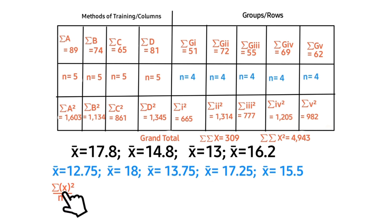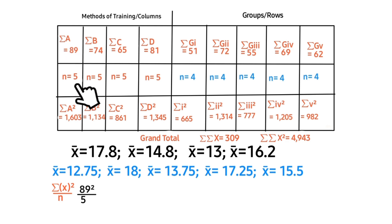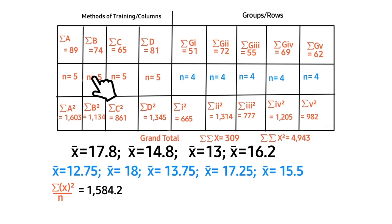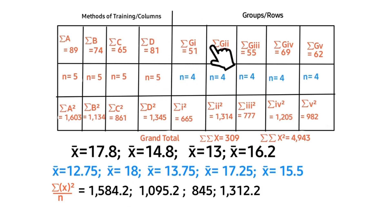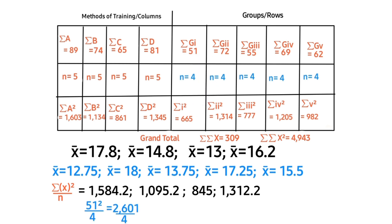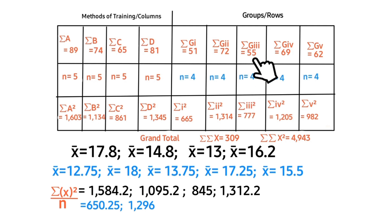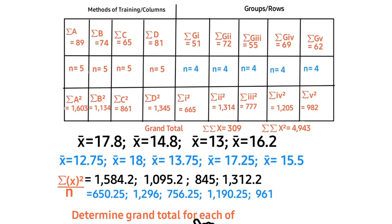Square each method of training and each group, then divide by n, represented with the appropriate symbol. For the first method: 89 squared over 5. 89 squared gives that value, divided by 5. For the second method: 74 squared divided by 5. Third method: 65 squared divided by 5. Fourth method: 81 squared divided by 5. For the groups: first group is 51 squared divided by 4, which gives that value. Then 72 squared divided by 4. Third group: 55 squared divided by 4. Fourth group: 69 squared divided by 4. Last group: 62 squared divided by 4.